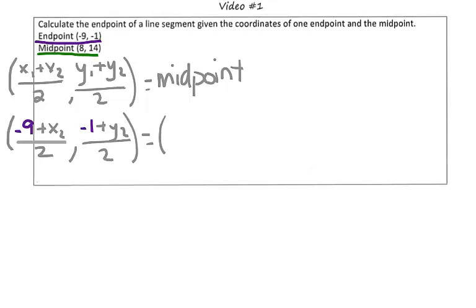But we know that that's equal to our midpoint, which is 8, 14. So our goal is to figure out what is the x and y value of our other endpoint. What we can do is set up two separate equations. So let's first start by looking at the x values.